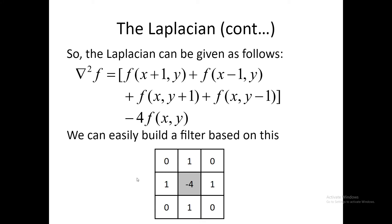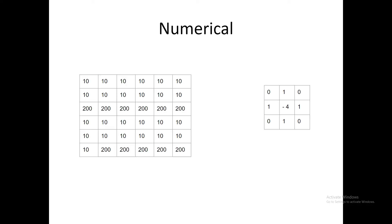If I build a filter according to this, the values I put in are: 1 for each of the four neighbors, and -4 for the central pixel — giving the kernel with 0s at corners, 1s on the four sides, and -4 in the center. If I take this filter and convolve it across my image I should be able to implement the Laplacian filter on my image.